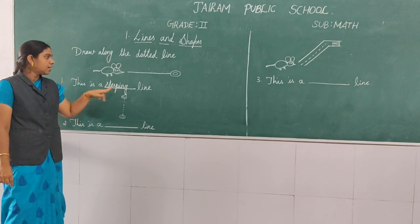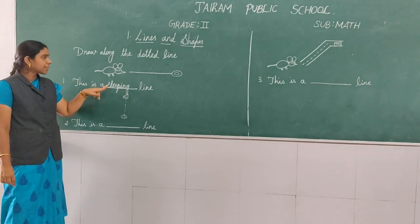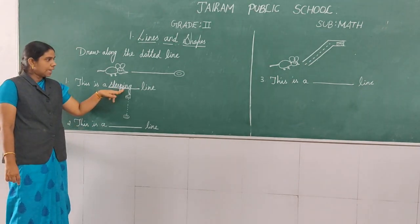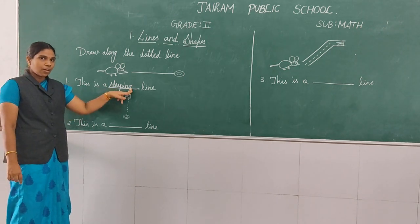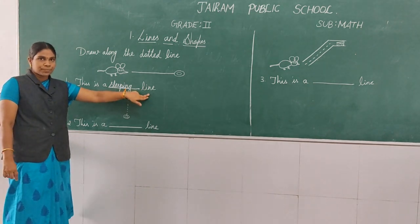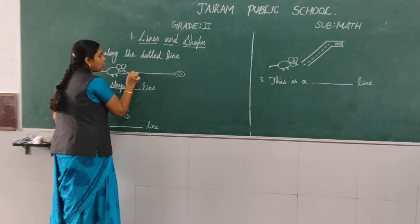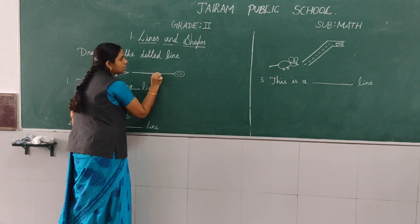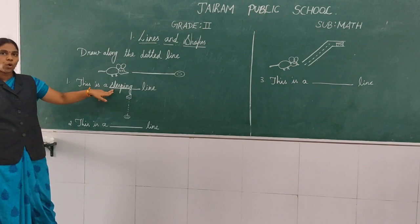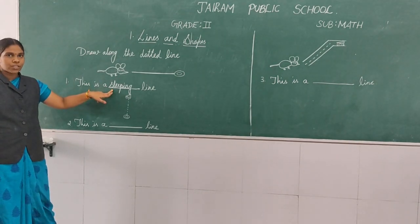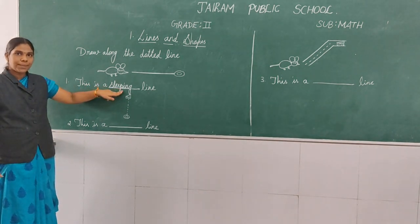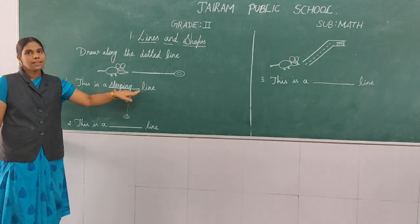Okay, spell the words along with me, children. S-L-E-E-P-I-N-G — sleeping. L-I-N-E — sleeping line. Okay, listen once again: if the line is in this sleeping position, we call it a sleeping line. What is the spelling? S-L-E-E-P-I-N-G — sleeping line.